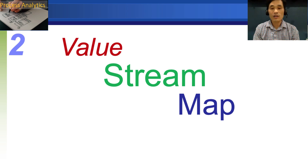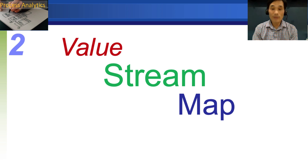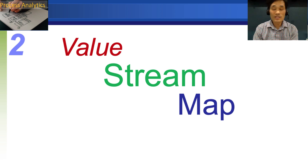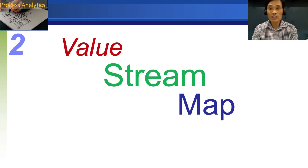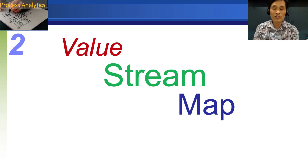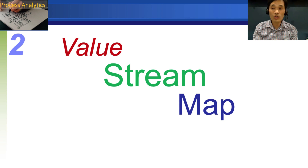The second topic of module 2 is value stream map. The first component of this module we discussed was process metrics. These metrics are heavily used in value stream mapping. In a sense, we learned those metrics to draw value stream mapping.